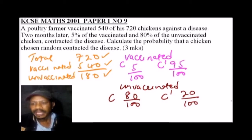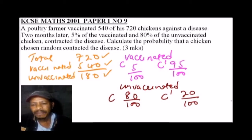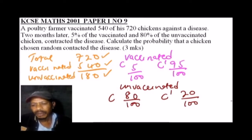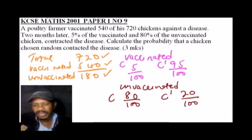Now, with this information, we can use a tree diagram to be able to solve and get the probability required. That is what you need to understand, so that when we come to solving the question, you will be able to follow. So let's solve the question and get the probability.